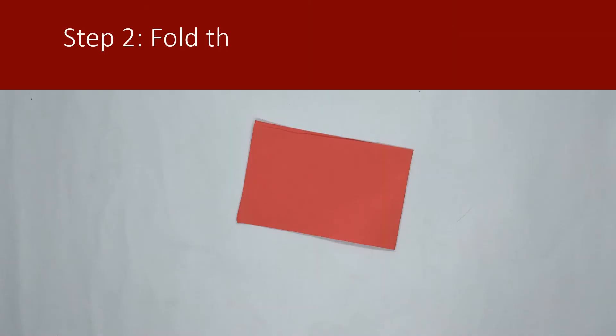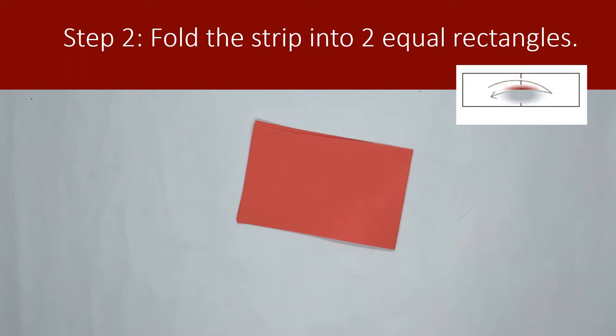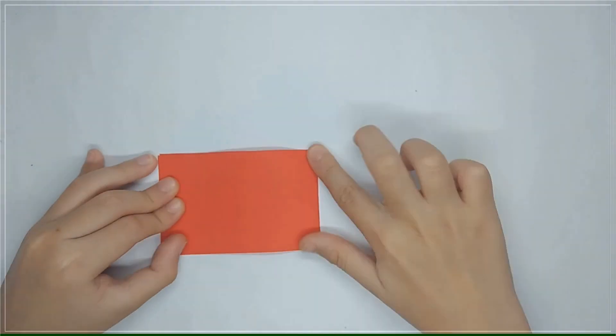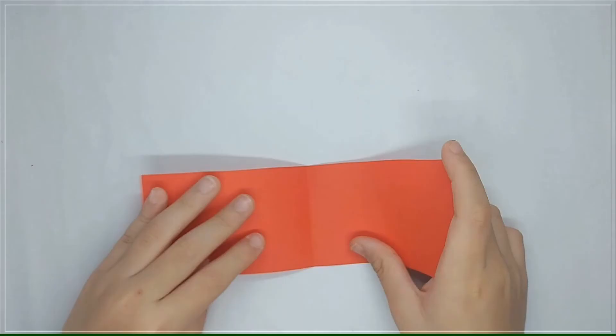Once we have our rectangle, we then fold it into two equal rectangles. Fold in half, crosswise, right to left. Squeeze well and open.